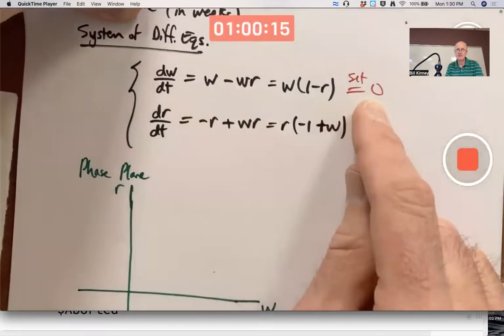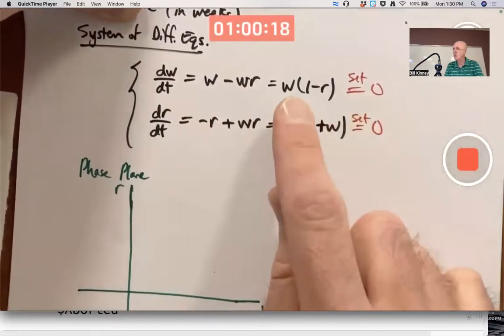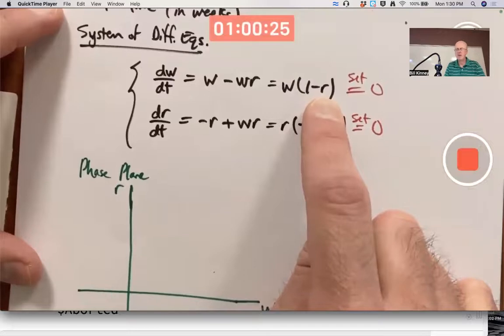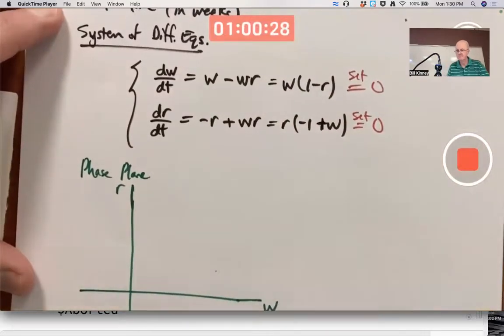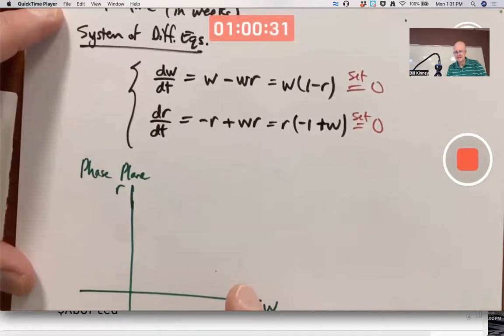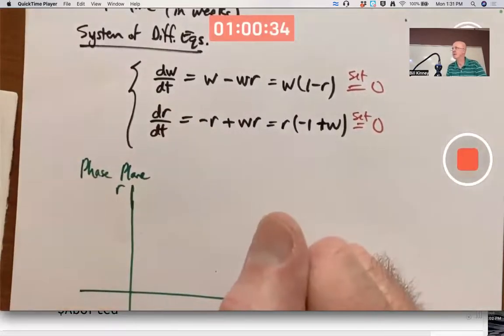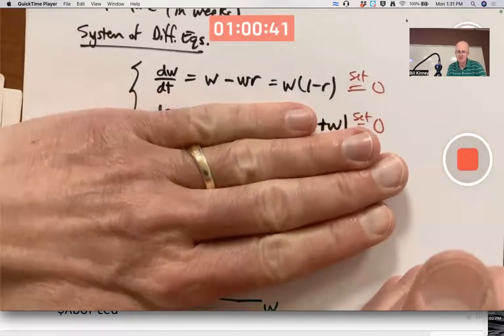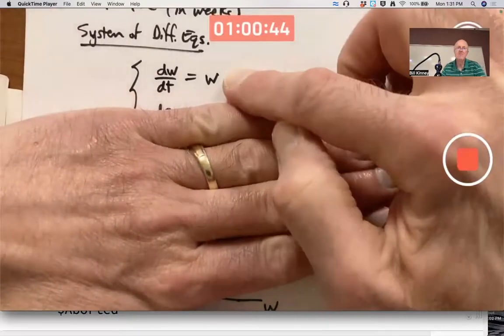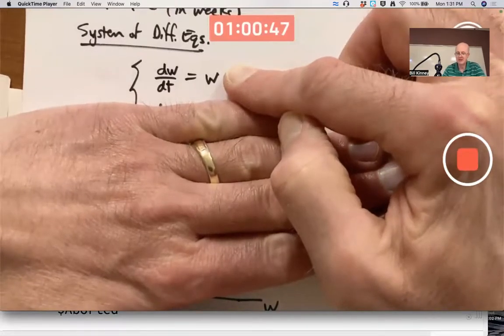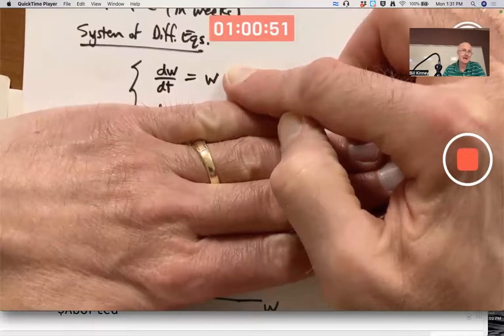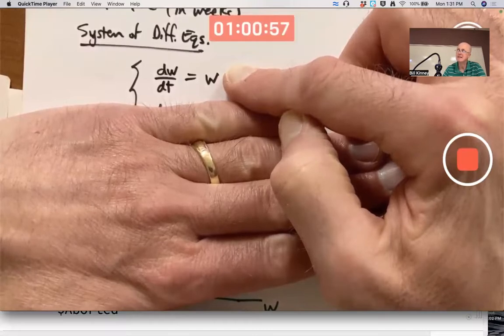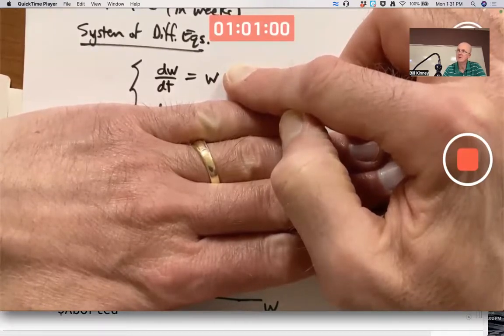What are these nullclines? Focus first on when dW/dt is zero. That can be zero in two ways: either when W itself is zero or when R is one. By the way, we should briefly explain why this model is reasonable. Pretend there's no robins, R is zero. That equation goes away. What happens to this equation if R is zero? That term goes away. dW/dt equals W. That's exponential growth. If there's no robins to eat the worms, they grow exponentially.